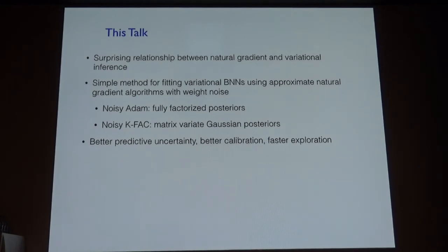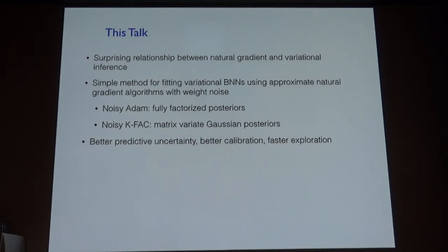What I'll talk about today is a surprising relationship between optimization and variational inference. I'll talk about a way of training Bayesian neural nets with very flexible posteriors, and these algorithms will look a lot like optimization algorithms used for fitting point estimates of a neural net, except that we add noise to the weights in a particular way. That will give us a variational approximation to the posterior — giving better predictive uncertainty, faster exploration, and better generalization.